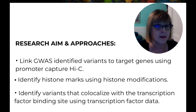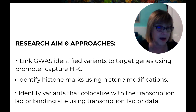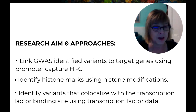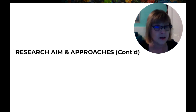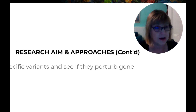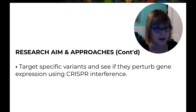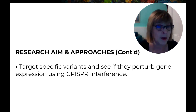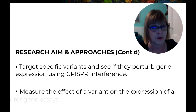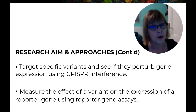We also use transcription factor data to look for variants that co-localize with a transcription factor binding site. We use more bespoke locus-specific assays — for example, CRISPR interference to target specific variants and see whether they perturb gene expression, or reporter gene assays to measure directly the effect of a region and/or a variant on expression of a reporter gene.